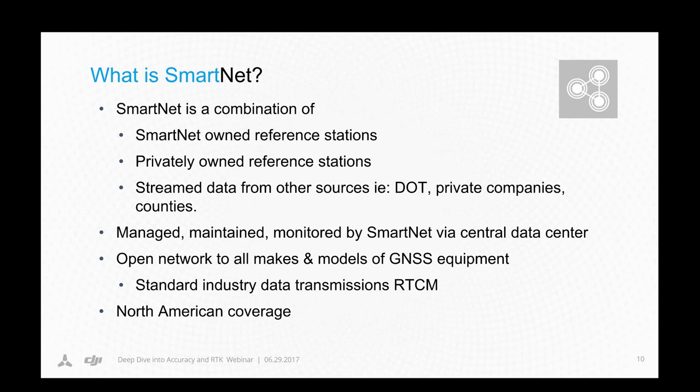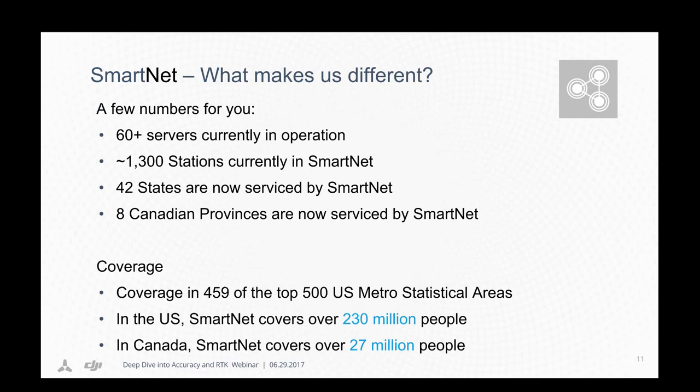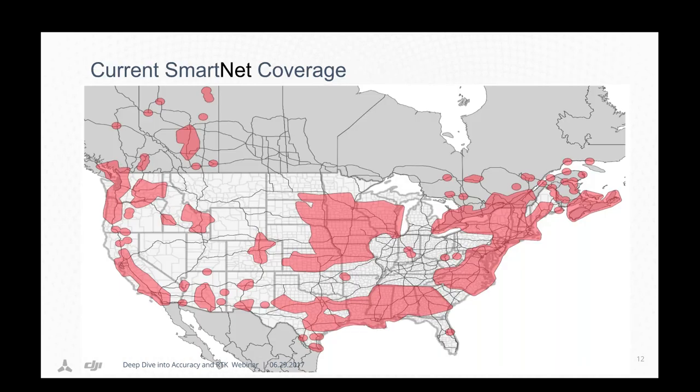We are the largest network, currently employing about 1,300 stations across North America, with coverage in 42 states and 8 Canadian provinces, and coverage in 459 of the top 500 US MSAs. So we've got a pretty good size footprint. The likelihood is that if you're working in a metropolitan or large market, we're going to be able to service you and help you gain even more efficiencies.